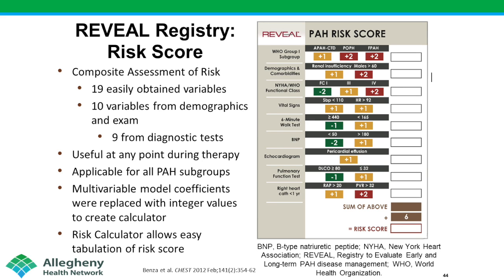There are several risk equation algorithms presently available, and the REVEAL risk score is one of the most common. It was derived from a very large registry of pulmonary hypertension patients, identifying 19 easily obtainable variables from demographics, exams, and diagnostic studies that have been shown to be highly predictive when used in a cumulative scoring system.